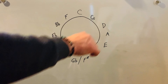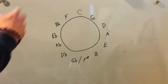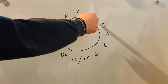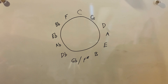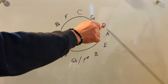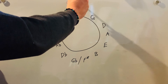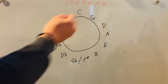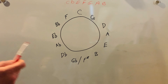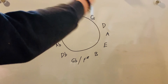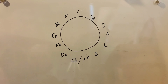As you see here, we've got notes going around the outside. We'll start with C right here. As you go clockwise — this is why it's called the Circle of Fifths — you're going up a perfect fifth. So if you're in the key of C major and you go up a perfect fifth, you end up on G. C to G is a perfect fifth. G to D is a perfect fifth. D to A is a perfect fifth. In the key of C, counting C, D, E, F, G — G is your perfect fifth.